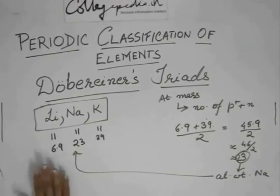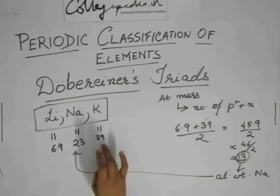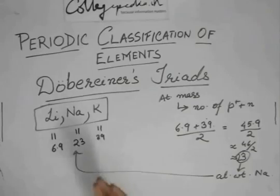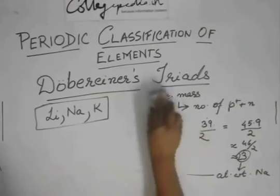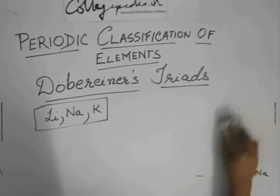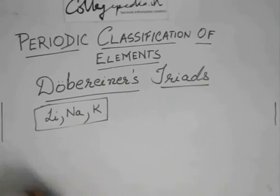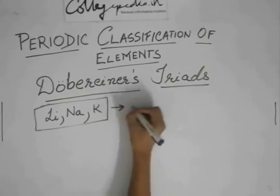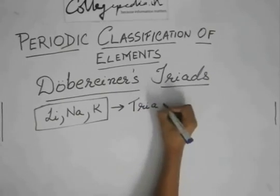The atomic weight of sodium. So he noticed that the average of atomic weights of lithium and potassium is roughly equal to the atomic weight of sodium. So he called this a triad because of their similarity. So this group is one Dobereiner's triad.